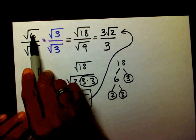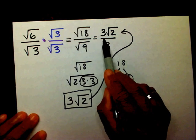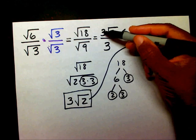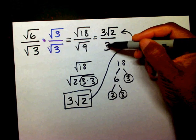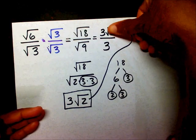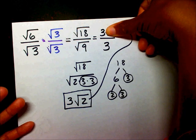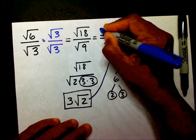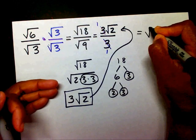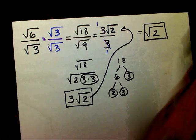So radical 6 divided by radical 3 gives us 3 radical 2 divided by 3. If you notice, you have a 3 in your numerator and a 3 in the denominator. We can treat this just like a regular fraction. 3 goes into 3 one time, so therefore the final answer is going to be radical 2.